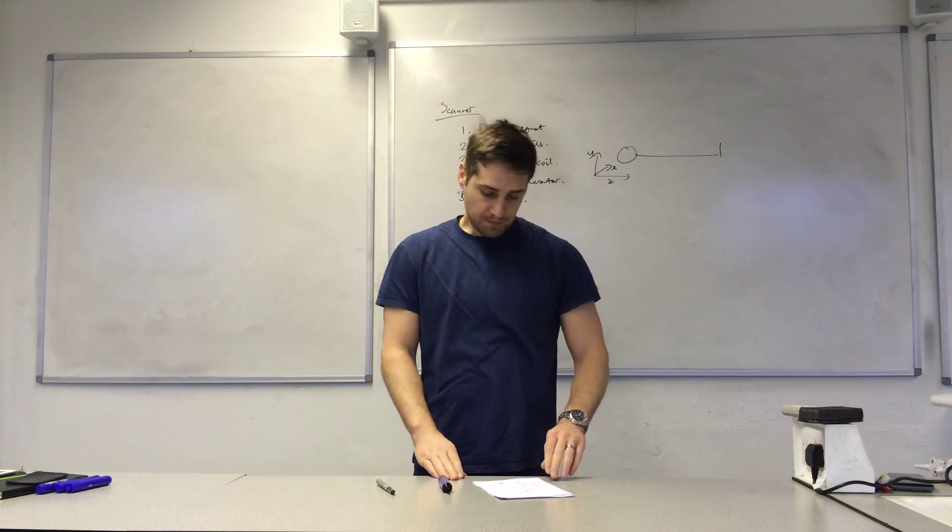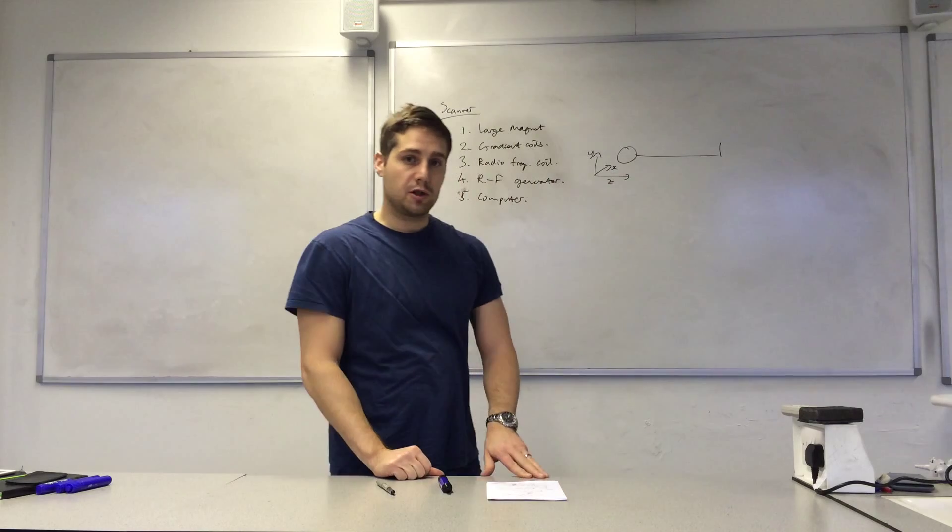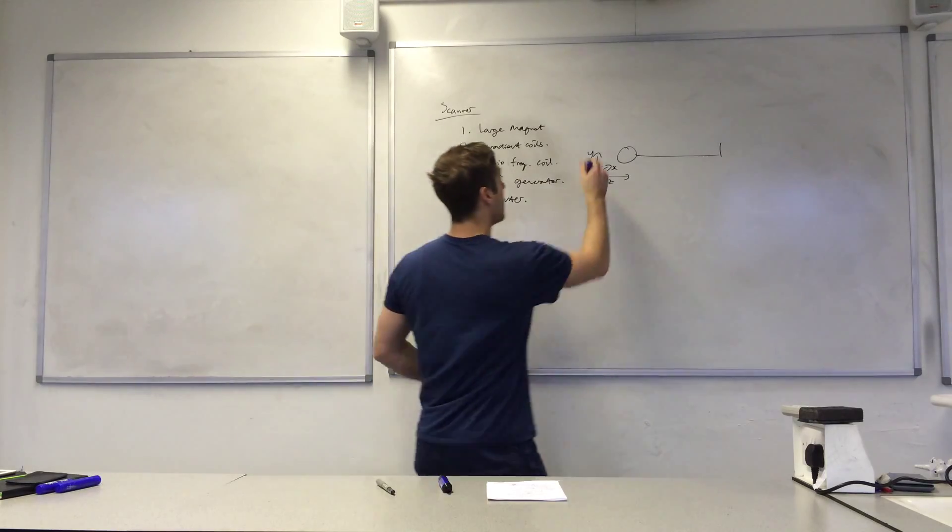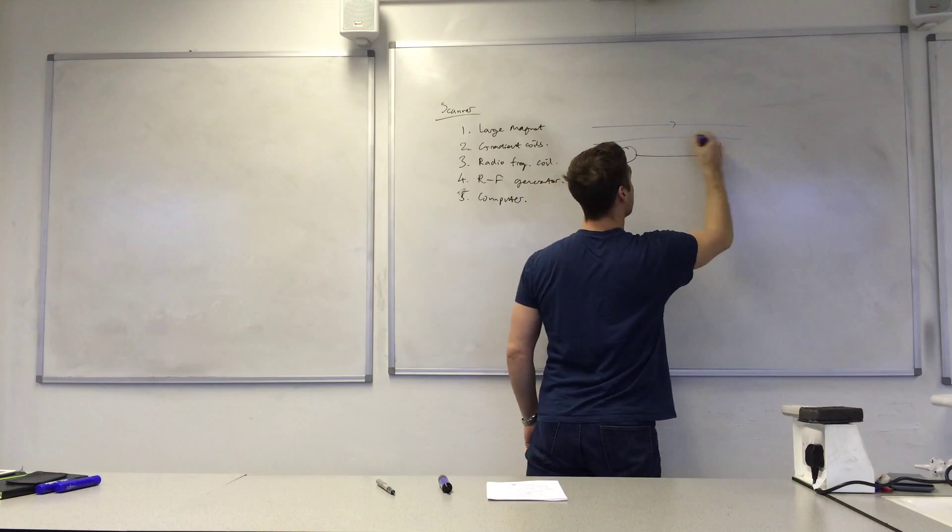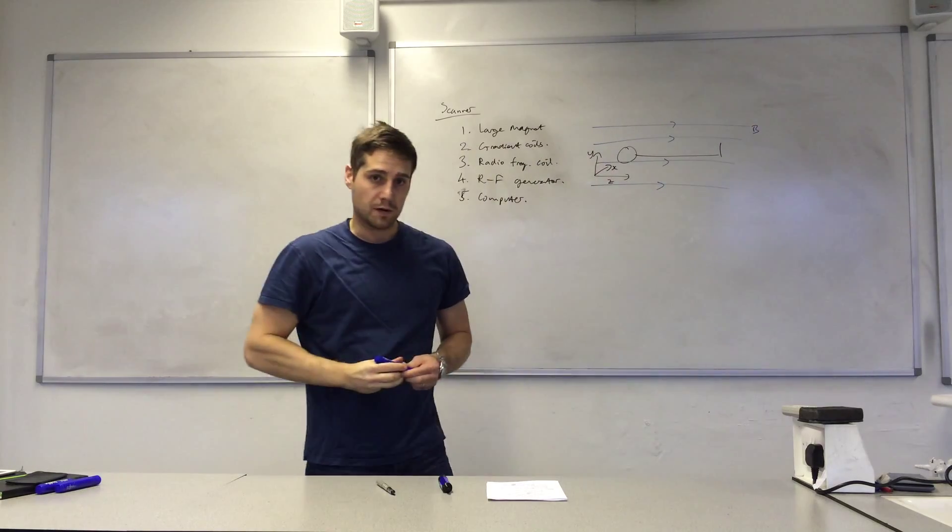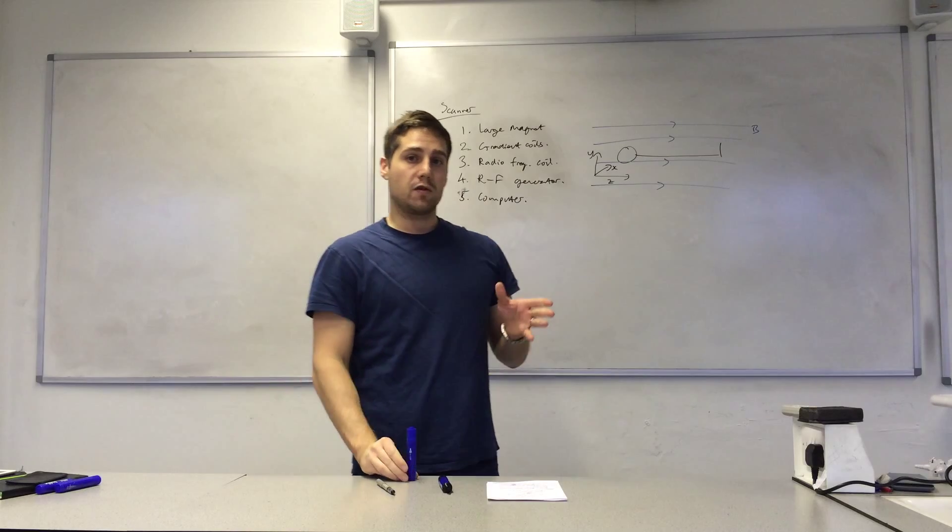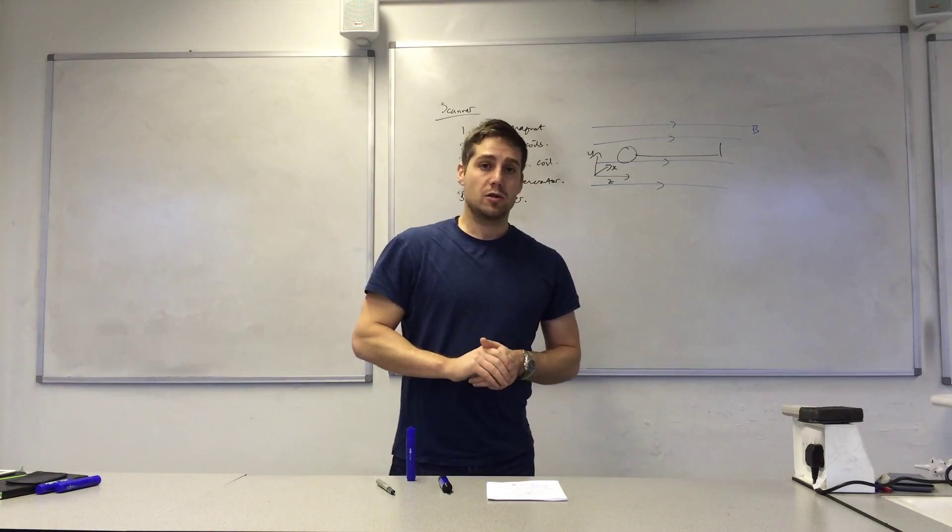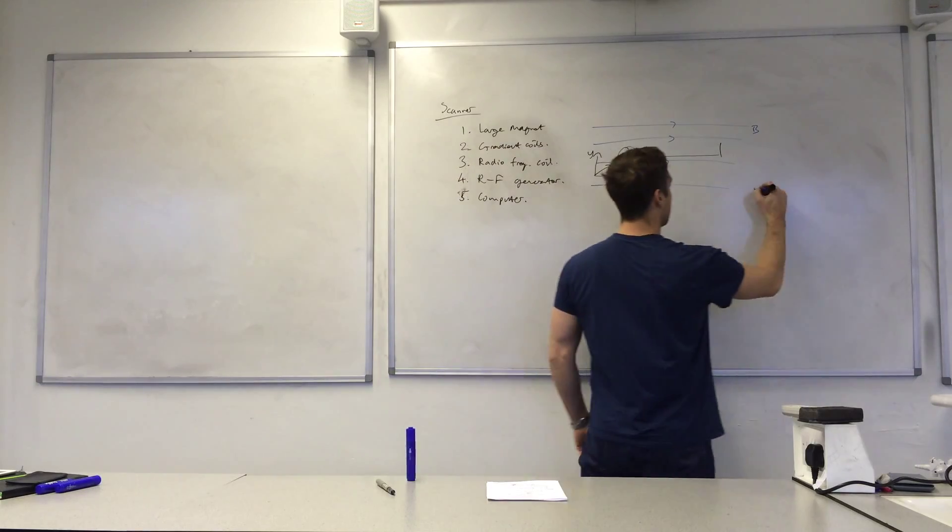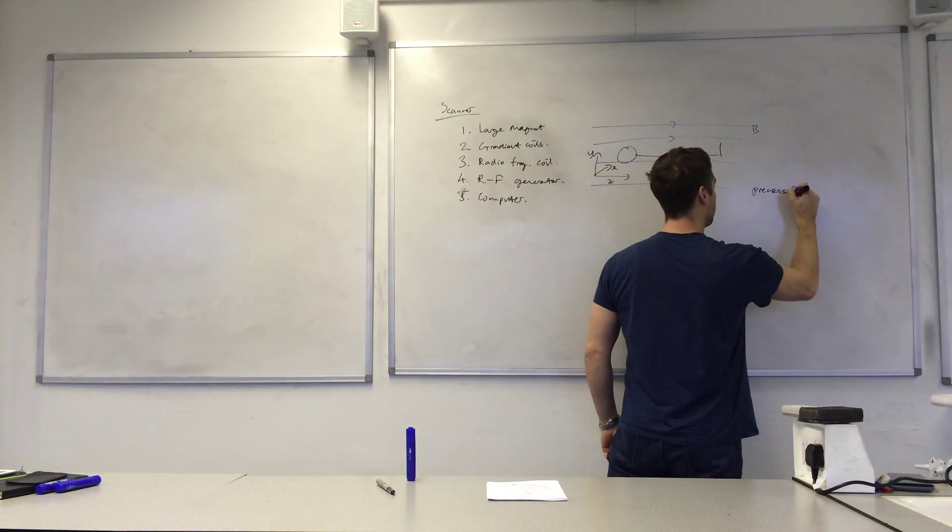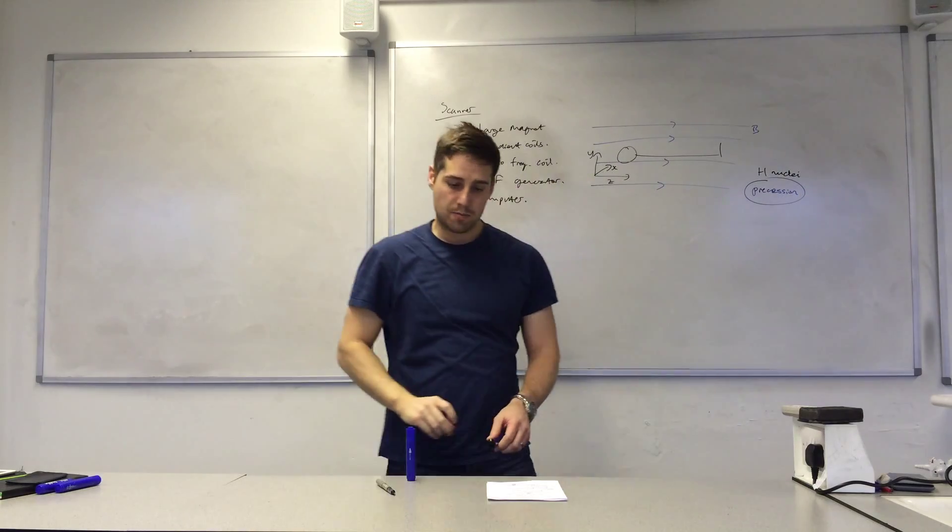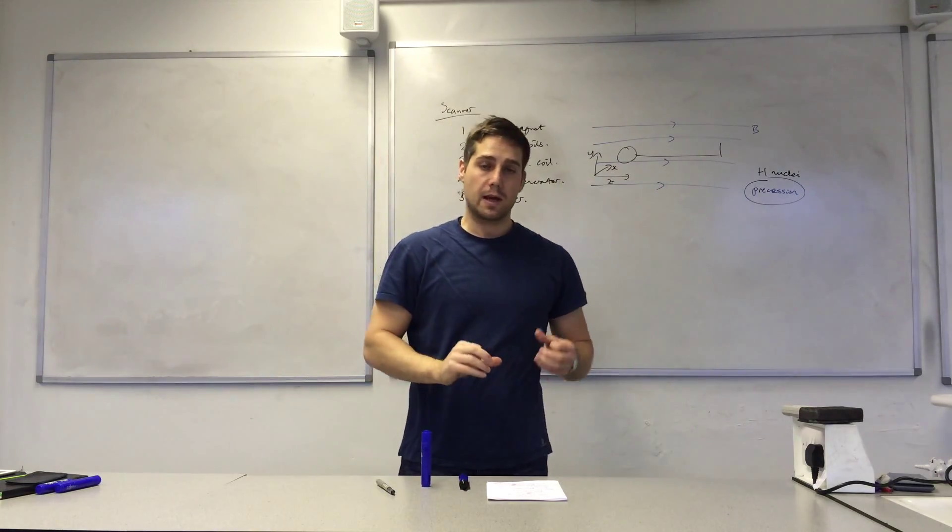So those are five functions for our five components. Now we need to know how we actually go about producing an MRI image. The first thing is we need to produce this strong, uniform magnetic field around the patient's body. And whenever you have a strong magnetic field like this, hydrogen nuclei will precess around the magnetic field lines. So precession is the key term here. Hydrogen nuclei, they precess. And what that means is that they behave like gyroscopes.